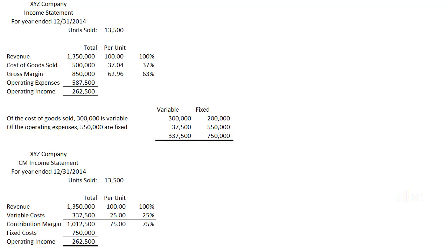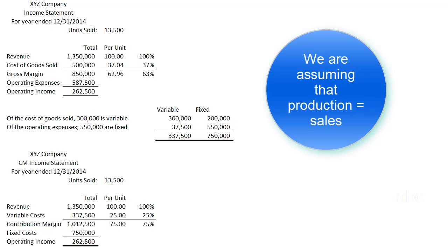The other difference between these two financial statements is that instead of coming down to a gross margin, we are coming down to a contribution margin. That said, as long as production equals sales, the operating income is going to be the same in both statements, because all we're really doing is rearranging the costs.